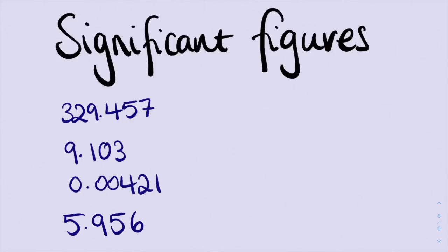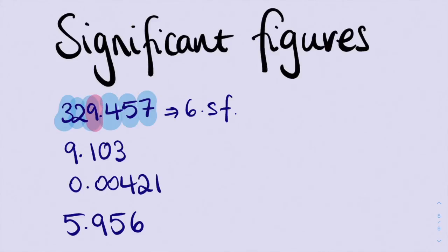Alright, so this first one, we have 1, 2, 3, 4, 5, 6 significant figures. If we're rounding it to 2 significant figures, we need to look at the third number. That 9 tells us what's going to happen to the 2. So we'll have 330 as our final answer. We have 1 significant figure and 2 significant figures, and then we have this 0 which we know doesn't count towards our number of significant figures.